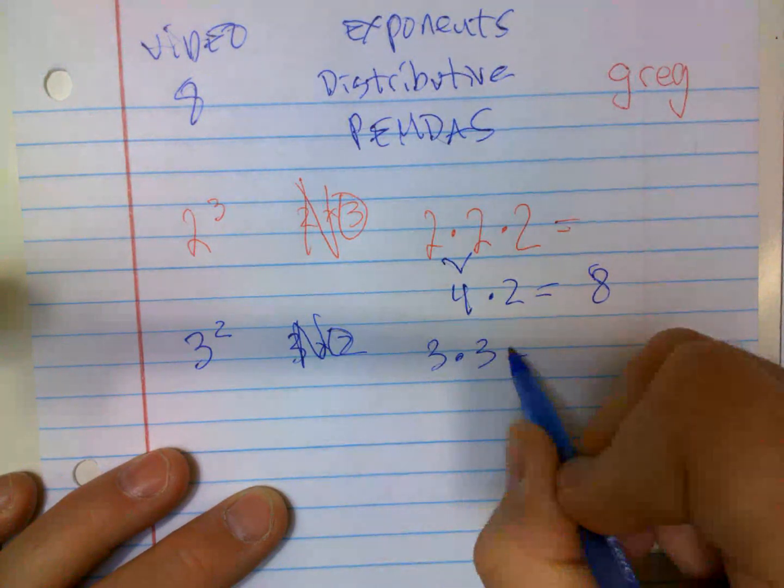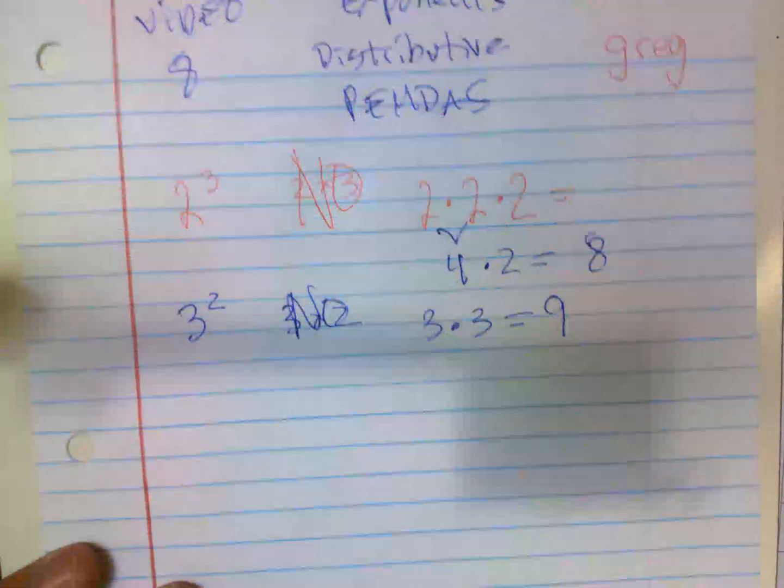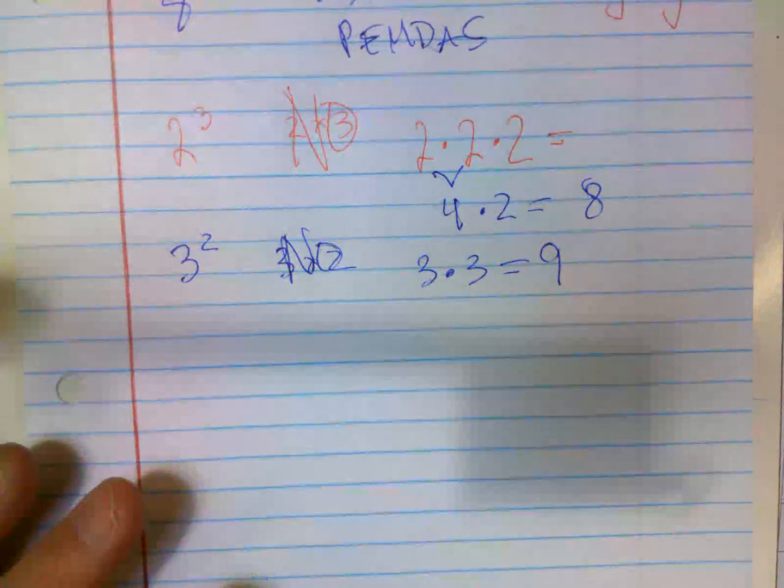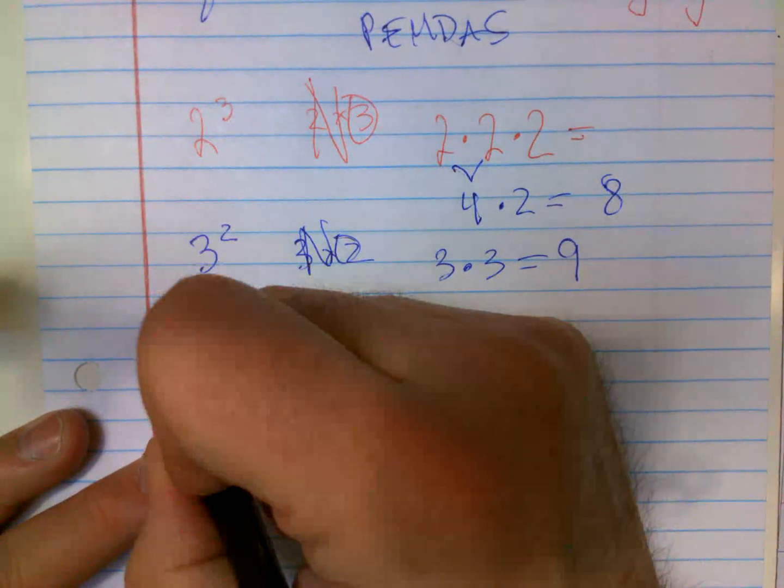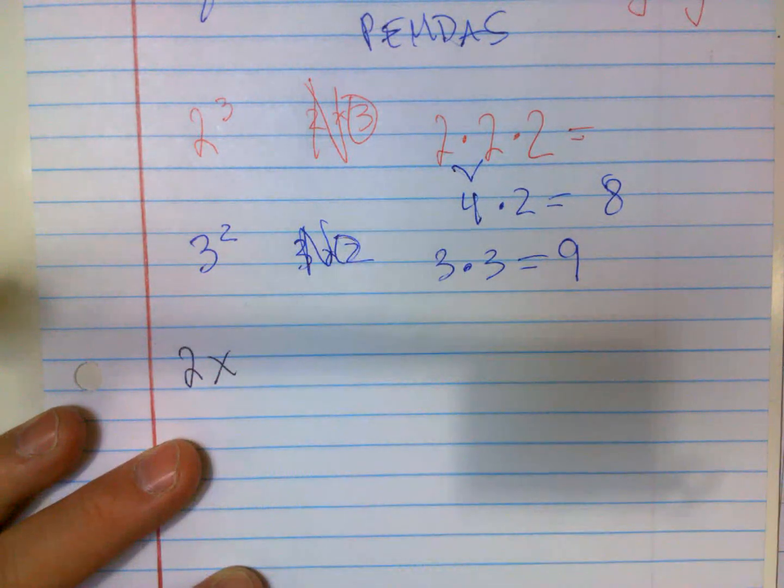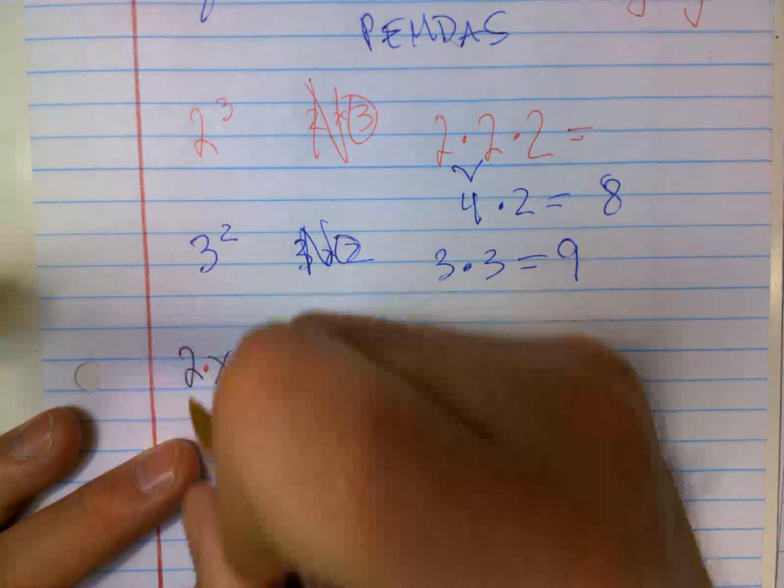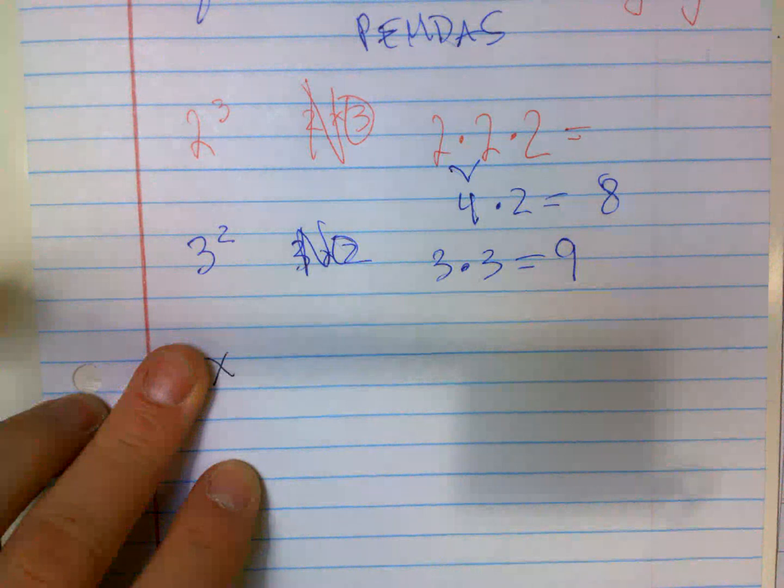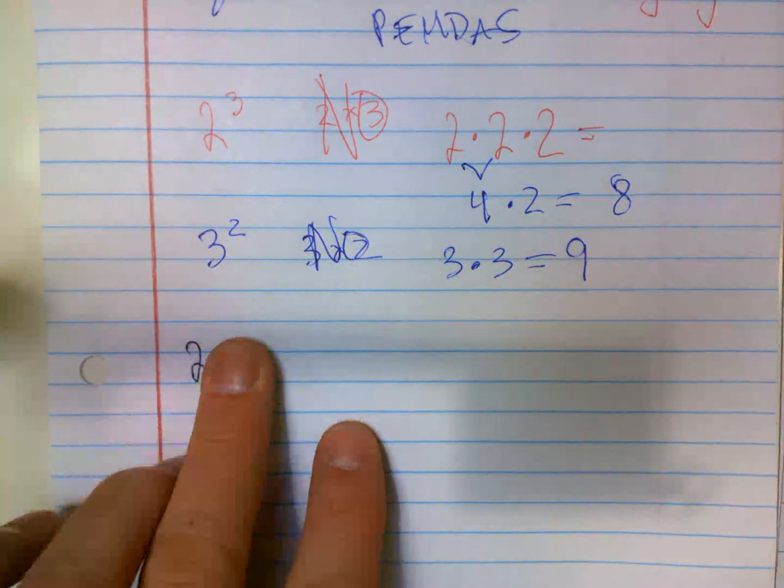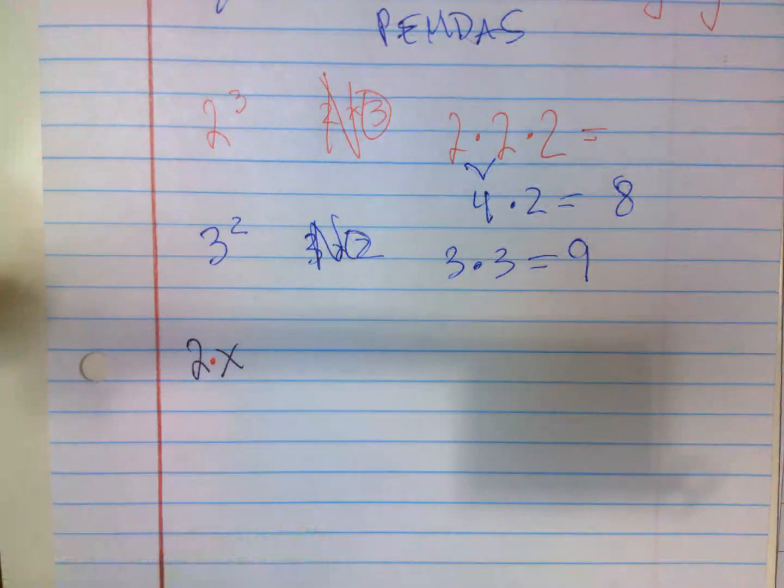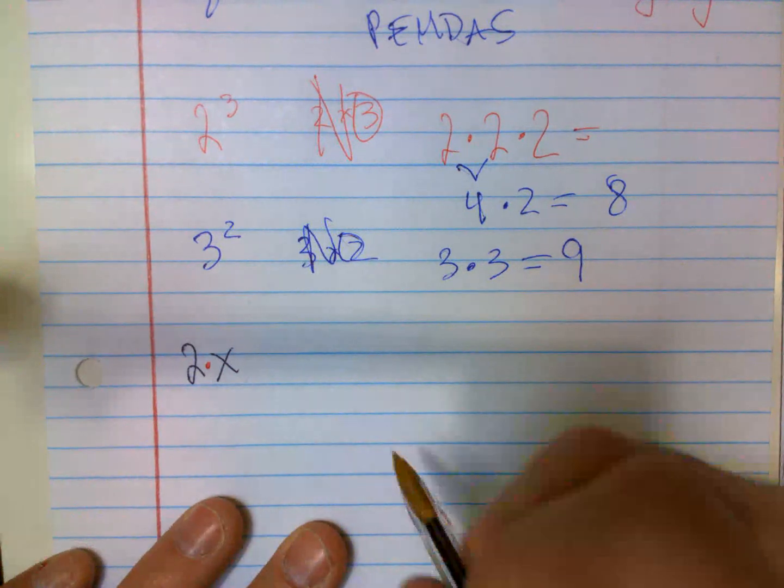Distributive property. We've jokingly said if you ever have two next to a letter or any number next to a letter, that just means they're multiplying. Because instead of saying I have a cookie, I have two cookies, which really means two times one cookie.